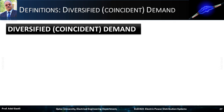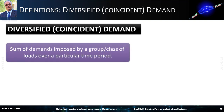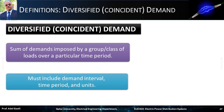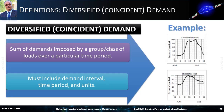Now we will define the diversified or coincident demand. It is the sum of demands imposed by a group or class of loads over a particular time period. Similarly, it must include demand interval, time period, and units. For example, these graphs show the load curves for commercial and industrial loads, where the loads are grouped by class and their sum demands are calculated and plotted over 24 hours.